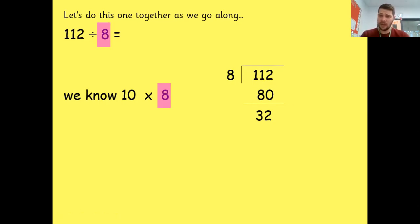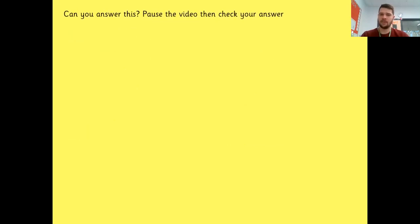And then eight times tables, eight, 16, 24, 32. So I've got four groups of eight. So we're left with zero. Circle our groups for 14.